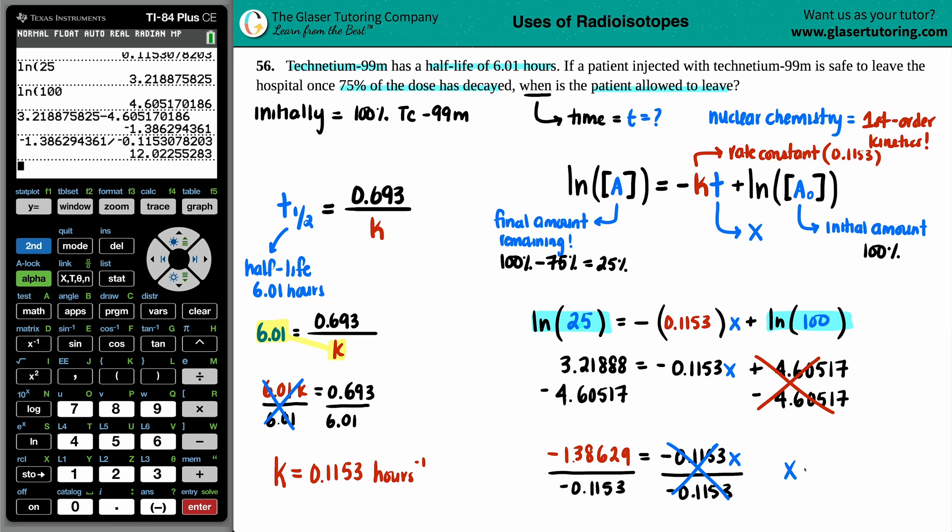So, x equals roughly 12 hours, I would say. So, 12.0, right smack on there. The time is in hours because our half-life was in hours. And we didn't change the units. And that's it. So, the patient comes in, gets the scan. And in 12 hours' time, the patient is allowed to leave. And that's it. Because only 25% of the technetium will still be in the body.